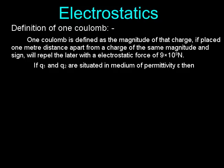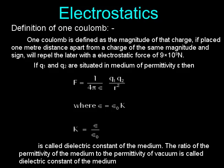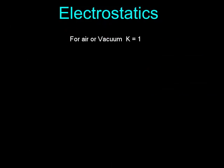If q1 and q2 are situated in a medium of permittivity ε, then F = (1 / 4πε) × (q1q2 / r²), where ε = ε₀k. k = ε / ε₀ is called the dielectric constant of the medium. The ratio of the permittivity of the medium to the permittivity of vacuum is called the dielectric constant. For air or vacuum, k = 1.